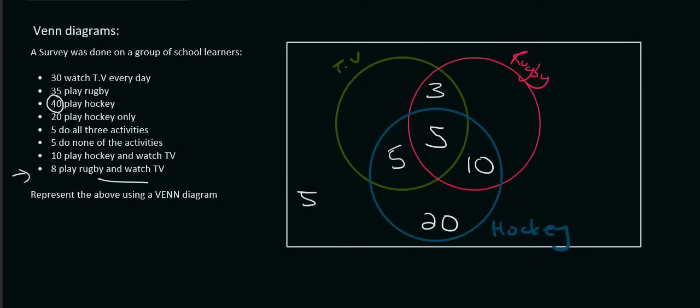Now, TV is almost complete. We just need the last piece, and they told us that there are 30 people who watch TV. So that's 5. This is already 5, 10, 13. So that's 17 people would go over there. And then for rugby, they say there are 35 people. Well, that's already 10, 15, 18. So 17 people go over there.